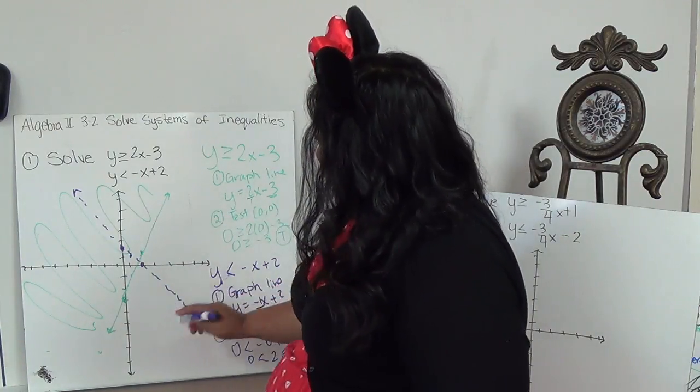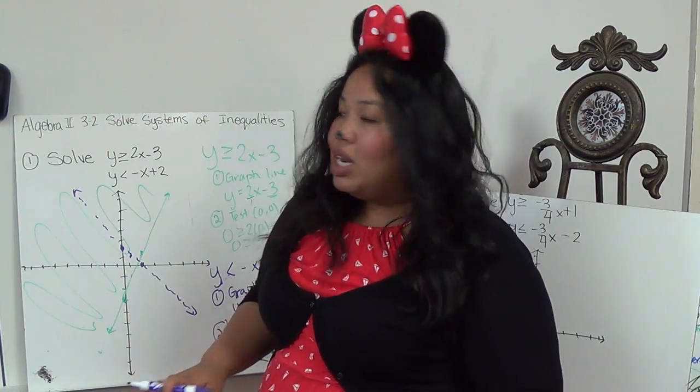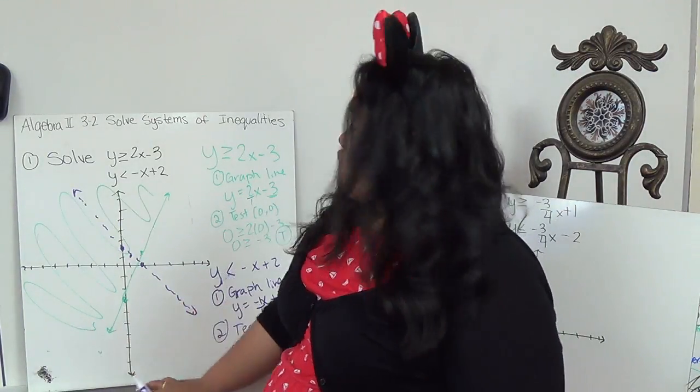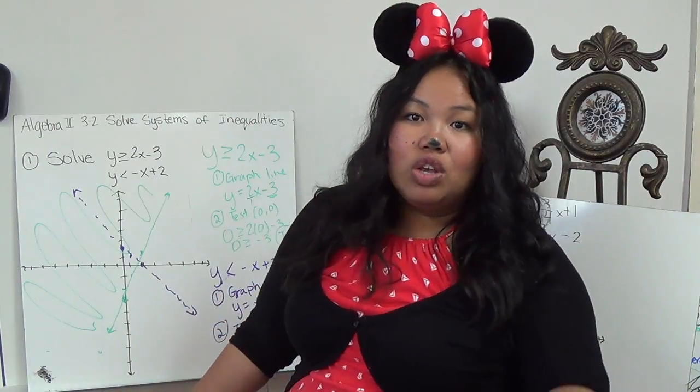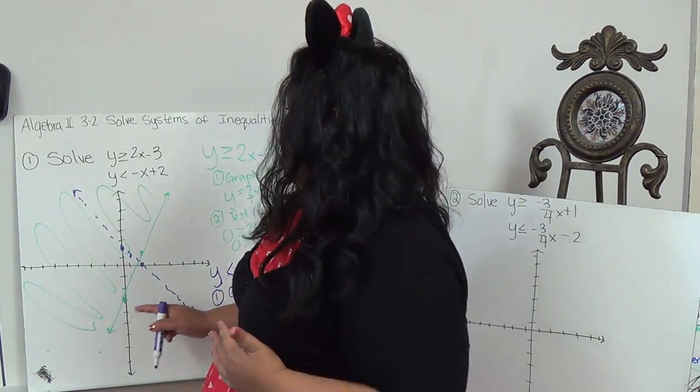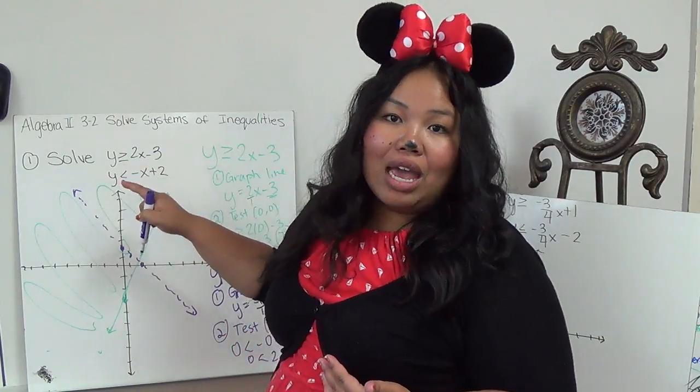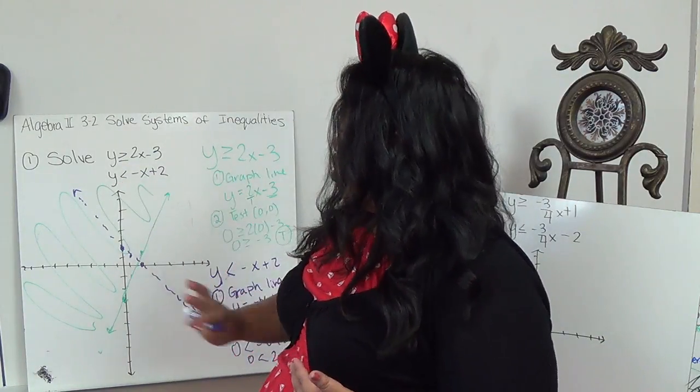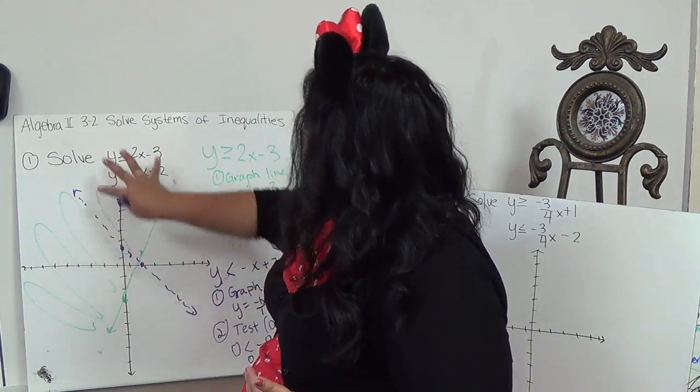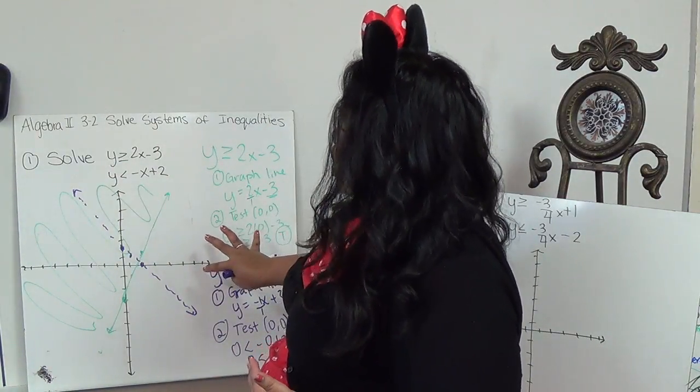So everything, now, when I'm shading, I'm going to ignore my first equation. Because I want to draw as if it's the only graph there, so I can see where they truly overlap. Because it shouldn't matter which one I graph first, and it shouldn't be dependent.